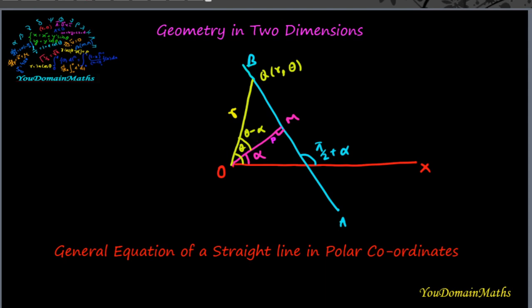Hello viewers, we will find the general equation of a straight line in polar coordinates. According to this picture, we will find the equation of straight line AB in terms of polar coordinates.